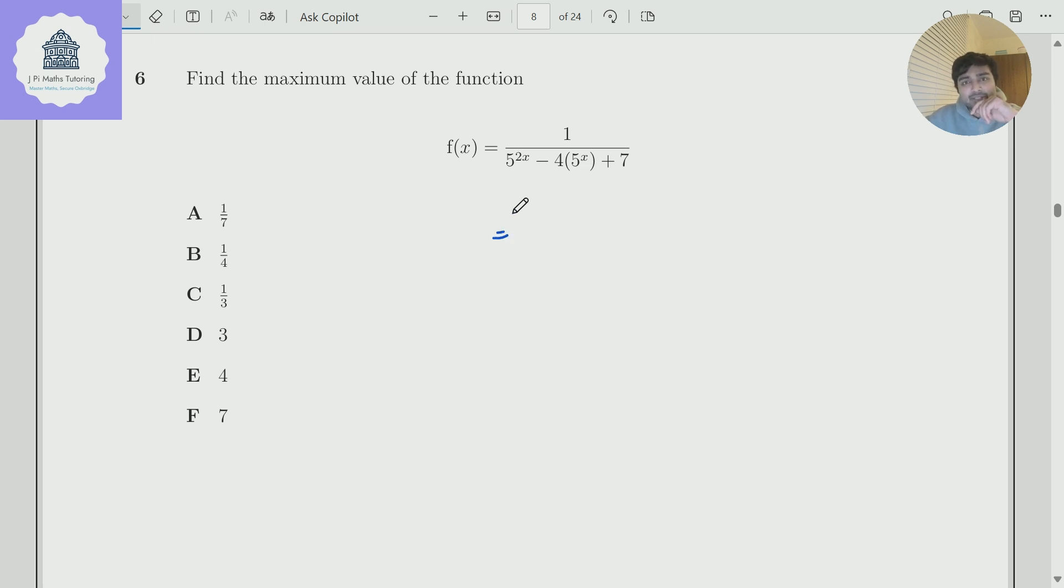There's basically only one way you want to solve this. What you definitely don't want to do is try and differentiate this function and set it equal to zero. What we notice is the denominator here is essentially a hidden quadratic. Because we're looking at a maximum or minimum of a function, we are going to complete the square. So this is going to be 5 to the x minus 2 all squared minus 4 plus 7, that's just plus 3.